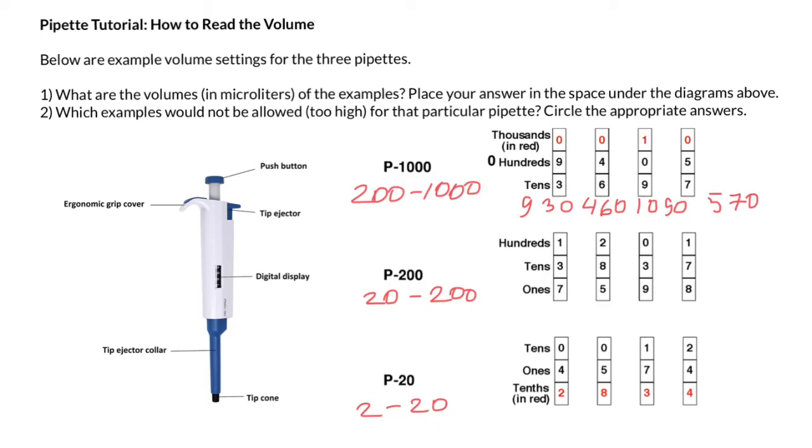And in order to answer the second question, we have to refer to this range or to the name of the micropipette itself. So we can measure with this micropipette only between 200 and 1000 microliters. So that means that this reading here is set too high. So we circle this one, that this is not appropriate setting for this micropipette.